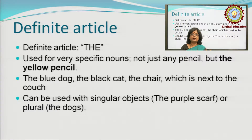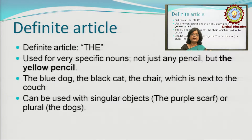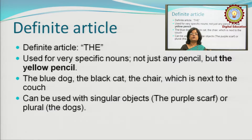The blue dog, the black cat, the chair — all these words denote something special. 'The blue dog is a very rare animal.' 'The black cat is not a good omen.' 'The chair on which I sit daily is very comfortable.' In all these three sentences, I have a particular thing I want to specify, so I have used 'the.' The definite article 'the' denotes something particular or special.